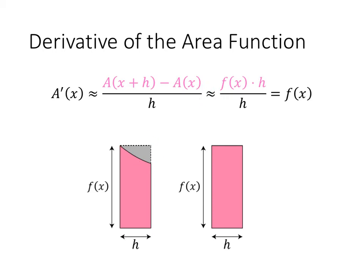So that means that A prime of x gets closer and closer to f of x the smaller h is. So in the limit as h goes to 0, A prime of x will actually equal f of x.